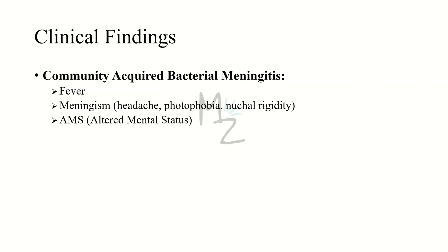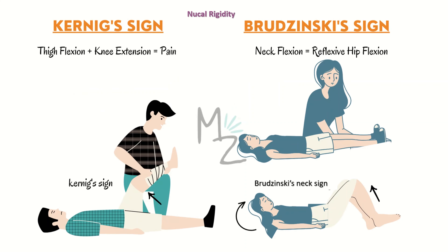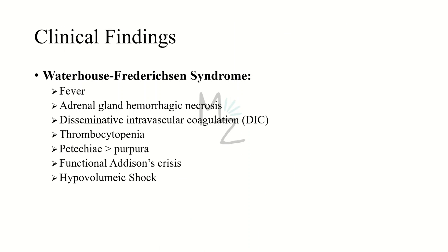Community-acquired bacterial meningitis presents with fever, headache, photophobia, nuchal rigidity, and altered mental status. Nuchal rigidity can be assessed by two signs. First is Kernig's sign: flexion of the thigh and extension of the knee causes pain — a positive sign indicating nuchal rigidity. The second is Brudzinski's sign: reflexive hip flexion occurs when the head is elevated. Waterhouse-Friderichsen syndrome presents with fever, hemorrhagic necrosis of the adrenal glands, disseminated intravascular coagulation, thrombocytopenia, purpura on the trunk or lower extremities, functional Addisonian crisis, and hypovolemic shock.